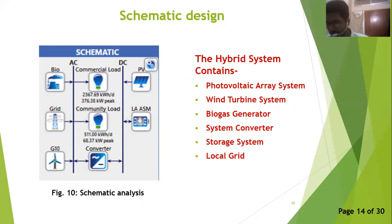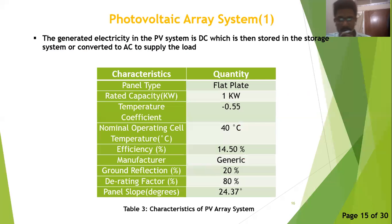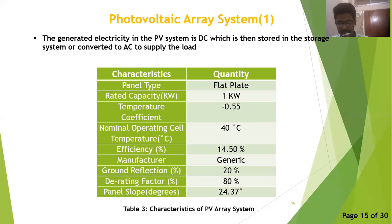The schematic design of the hybrid system is applied in the HOMER simulation software. The hybrid system contains a photovoltaic array system, wind turbine system, biogas generator, system converter, storage system, and a local grid. The PV model used in the system is a flat plate with a rated capacity of 1 kW, nominal operating cell temperature of 47 degrees Celsius, a derating factor of 80%, and an efficiency of 14.50%. Other characteristics are shown in table 3.